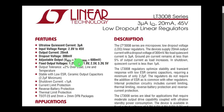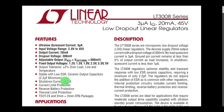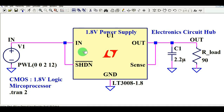The LT3008 is available in fixed output versions: 1.2V, 1.5V, 1.8V, 2.5V, 3.3V, and 5V. Output tolerance is 2% over load, line, and temperature. You need a low ESR ceramic capacitor with a minimum value of 2.2 microfarad for stable output. Shutdown current is less than 1 microampere — very important for battery applications. It also has internal current limit protection, reverse battery protection, and thermal limit protection.